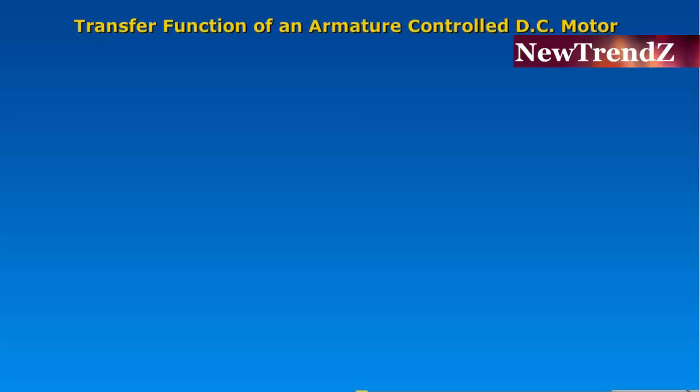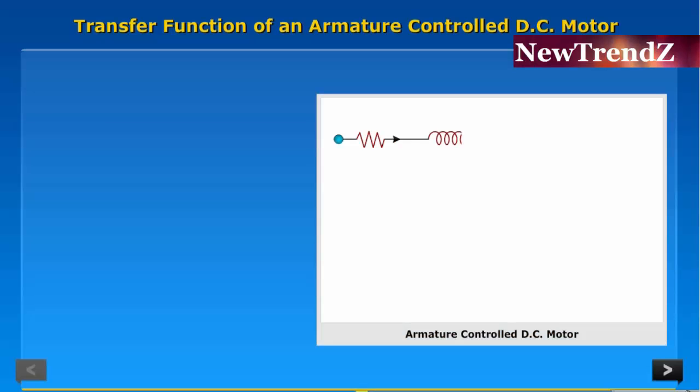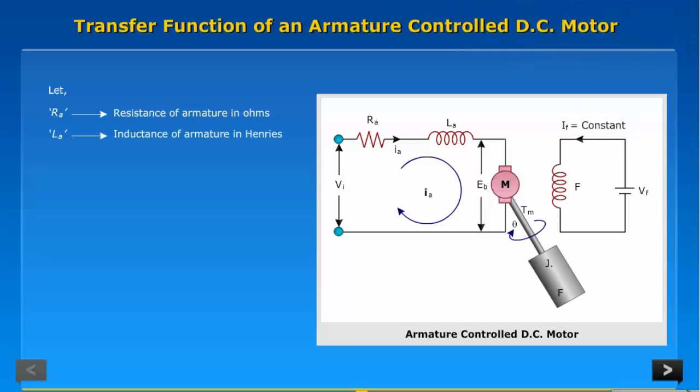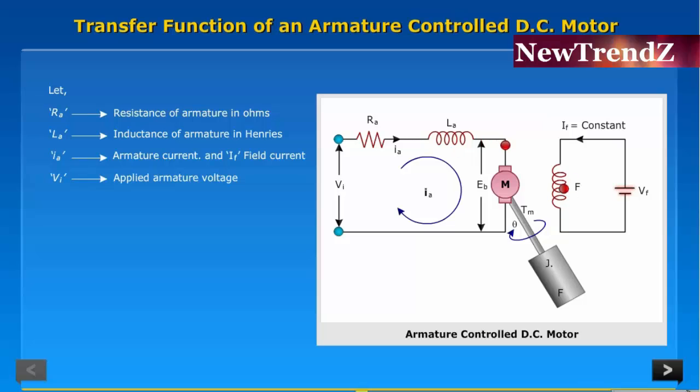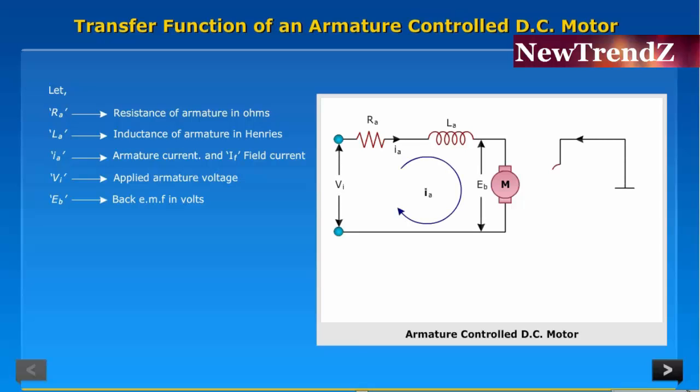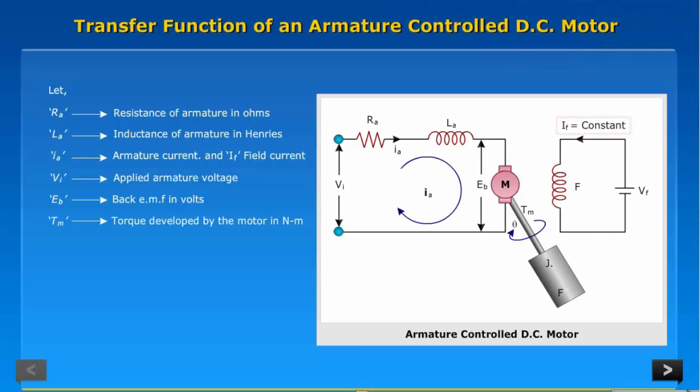Transfer function of an armature controlled DC motor. Let Ra = resistance of armature in ohms, La = inductance of armature in Henrys, Ia = armature current and If = field current, Vi = applied armature voltage, Eb = back emf in volts, Tm = torque developed by the motor in Newton-meters.